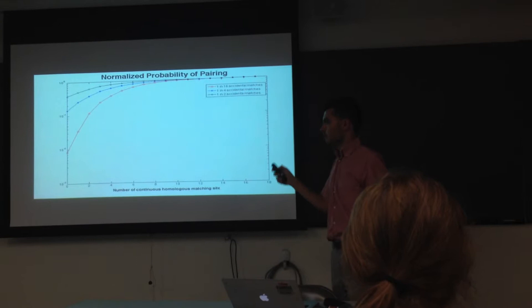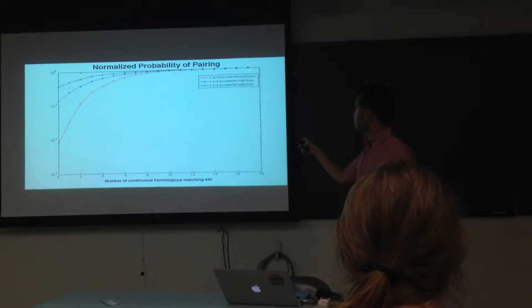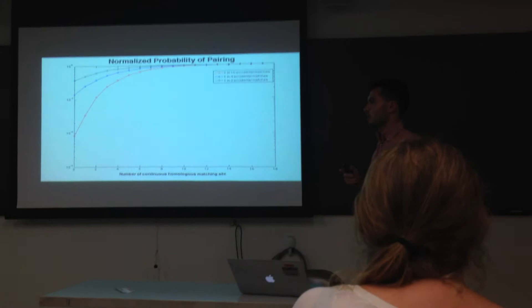I should say that these results are all normalized. We normalize them to the value here. So in fact, the homologs may not always actually reach that parallel state. The probability may not quite be one. But we're just normalizing it to show the comparison between heterologs and homologs.